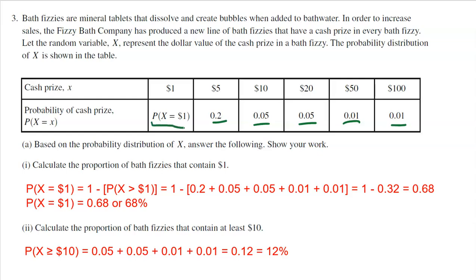And the $1 is left blank, but they're telling us that underneath the $1 would be the probability of $1, but we don't know what it is. So of course, that's exactly what question one is: Calculate the proportion of bath fizzies that contain $1. So it's really just as simple as adding up all of the other proportions and subtracting them from 1. So the probability that X equals $1 would be 1 minus everything greater than 1.